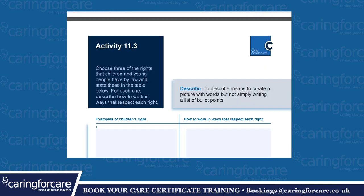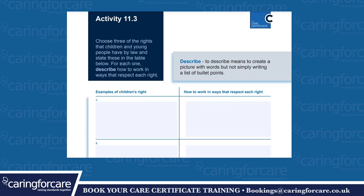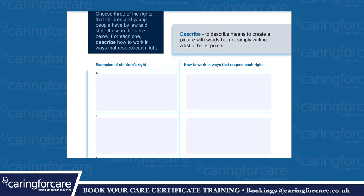Activity 11.3. Choose three of the rights that children and young people have by law and state these in the table below. Describe how to work in ways that respect each right. To describe means to create a picture with words, but not simply writing a list of bullet points. Examples of the children's right and how to work in ways that respect each right.